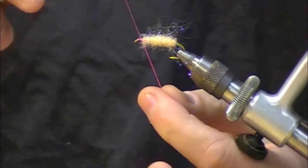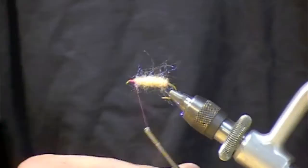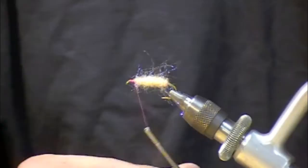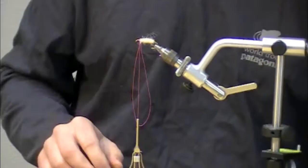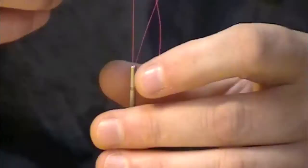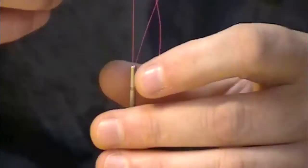Okay just for grins here we're going to do the same process again to kind of help illustrate it. Make your loop, catch it with the end of the tool, add a bit of dubbing up into the loop, stretch it tight, I do a little twist to help get it started.